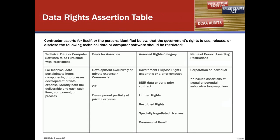The FAR and DFAR have a data rights assertion table — that's how you communicate to the government what deliverables you're going to limit. You communicate through the data rights assertion table that the government will get limited rights, or restricted rights, or government purpose rights in some technical data and software, and limited rights in others. This is your way to put the government on notice of what they will and will not get rights in. In the asserted rights category, the bases we talked about include government purpose rights, CBER data rights provisions, limited rights, and restricted rights. There's also potential for specifically negotiated license rights. Under the DFAR, commercial item is not listed, which creates difficulties for clients when some of the technical data or software they're providing qualifies under the commercial rule.